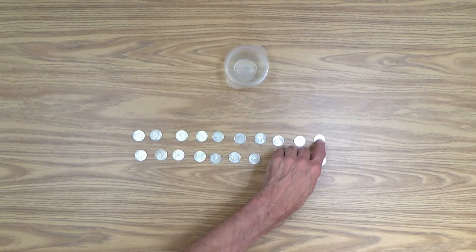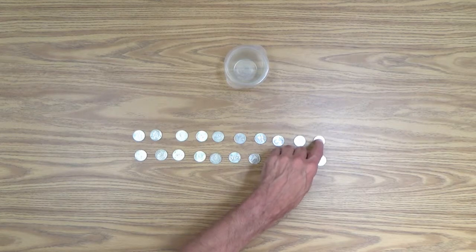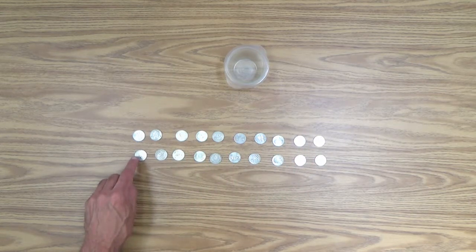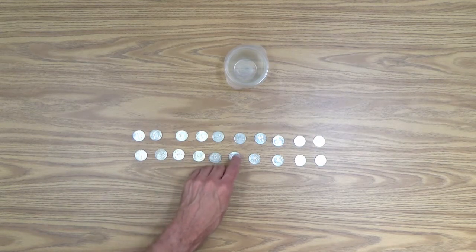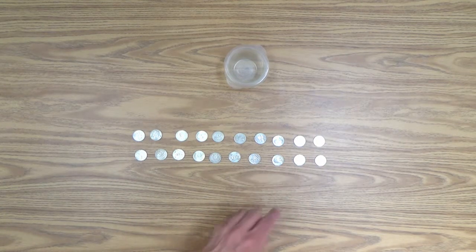And just like as you would be reading, you come down to the next line or row and continue your count 11, 12, 13, 14, 15, 16, 17, 18, 19, 20.